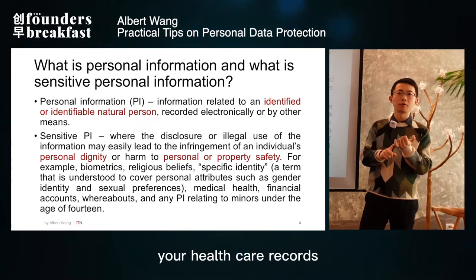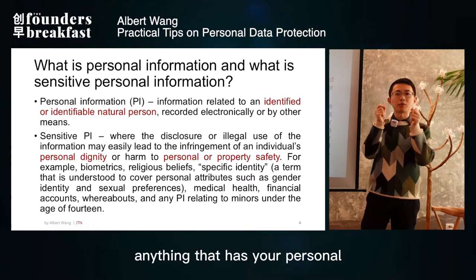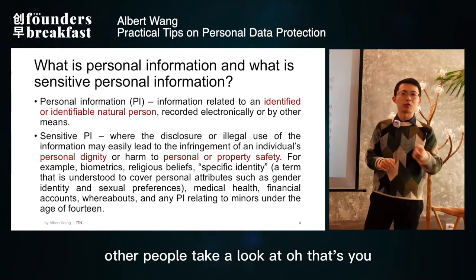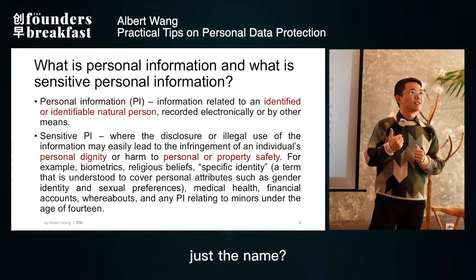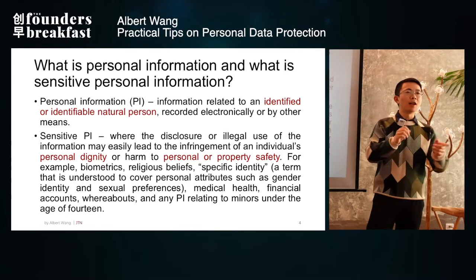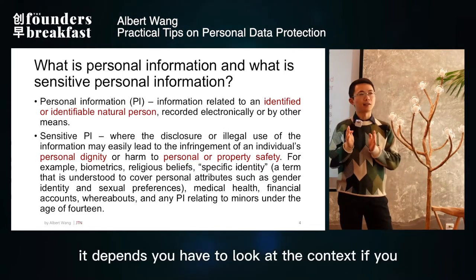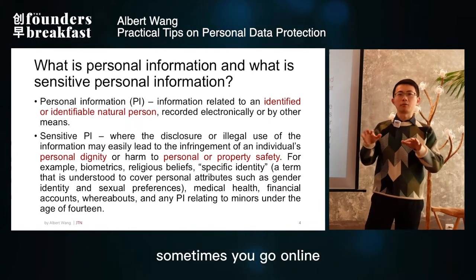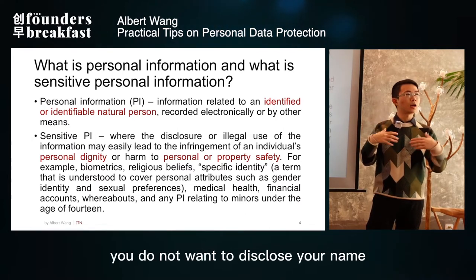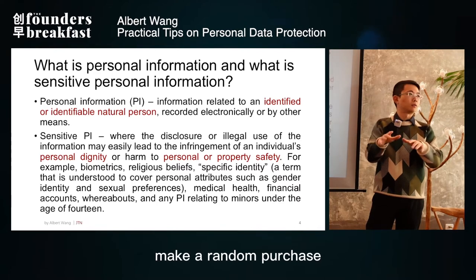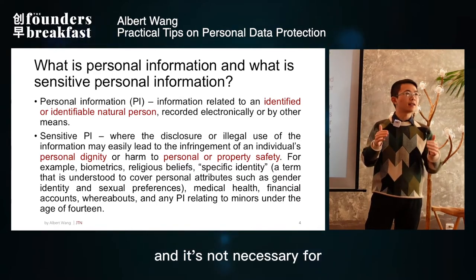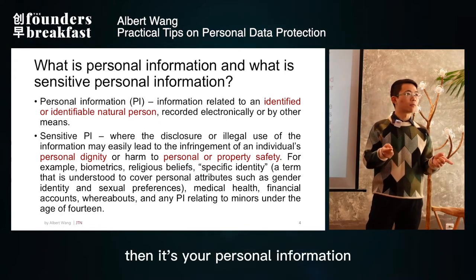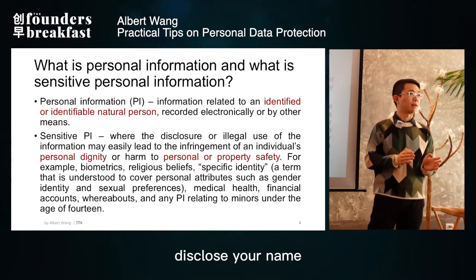Personal information includes a personal email address, personal phone number, ID card, healthcare records, hospital or insurance policy — anything that can identify you. A name depends on context: if you go online and tell everybody your name, it's fine. But if you order something and want to stay anonymous and it's not necessary for the seller to ask your name, then it's your personal information and you have the discretion not to disclose it.